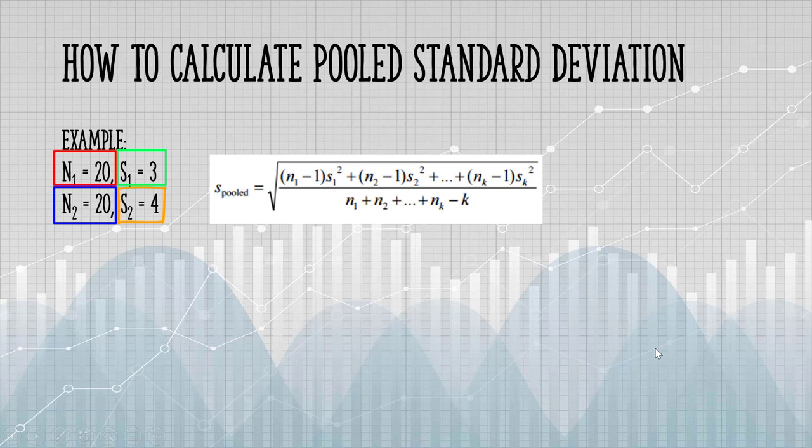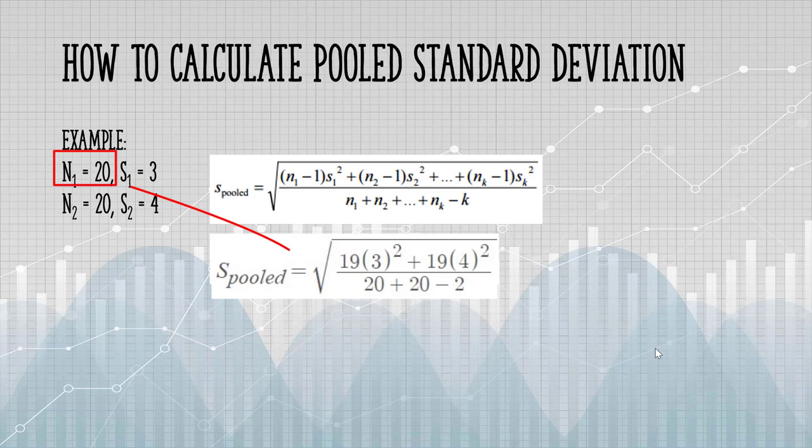So now we have our data. Let's plug that information into the formula. Sample 1 has 20 items, minus 1, that's 19, and we multiply that by the sample standard deviation.